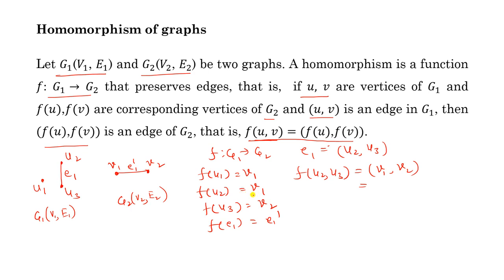Now, v1 is f(u2) and v2 is f(u3). So we can write f(u2, u3) = (f(u2), f(u3)). This means for the edge (u2, u3) in g1, there is a corresponding edge (f(u2), f(u3)) in g2. In this way, you can verify the homomorphism of graphs.